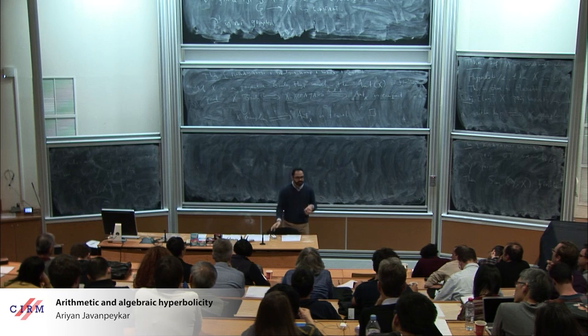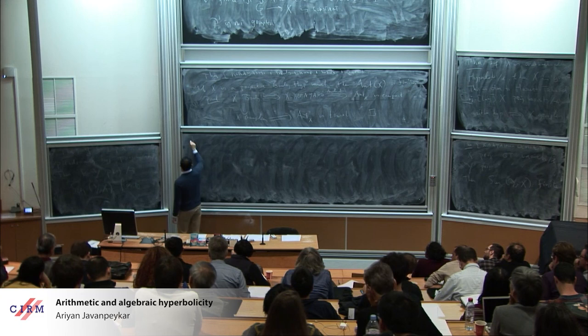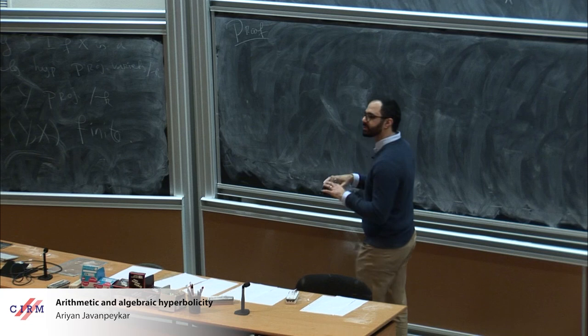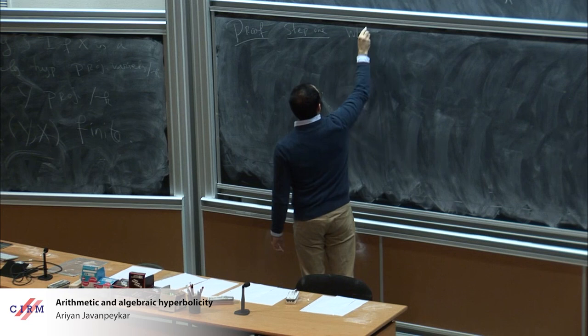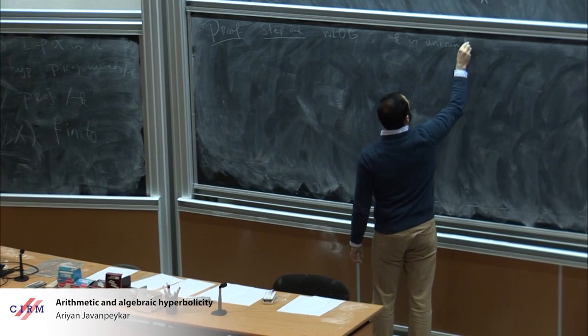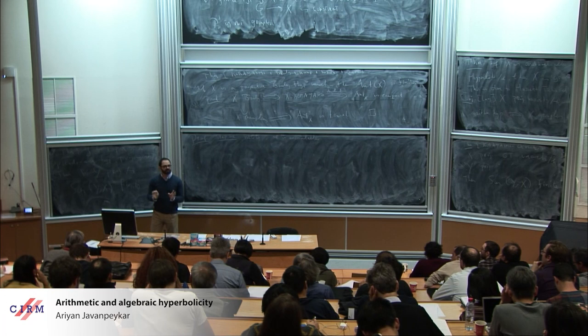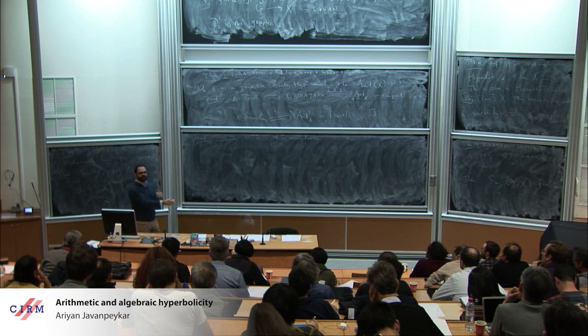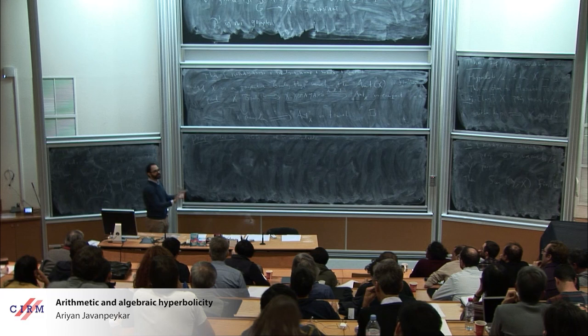Let me recall how we prove this. In the Brody hyperbolic case, we showed the moduli space is compact and discrete. Here, we show it is bounded — a finite-type scheme. Step one: without loss of generality, k is uncountable. If k is countable, go to an uncountable field; by persistence of pseudo-algebraic hyperbolicity, it remains pseudo-algebraically hyperbolic. Once k is uncountable, you can use Bertini-type cutting arguments.